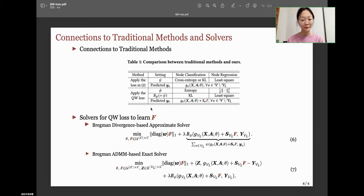We average the learned optimal label transport matrix F to integrate predictions with GNN for the final result. In addition, regarding the optimization problem for the QW loss, we proposed two algorithms based on Bregman divergence and BADMM to compute the matrix F. More details and experiments can be found in our paper.